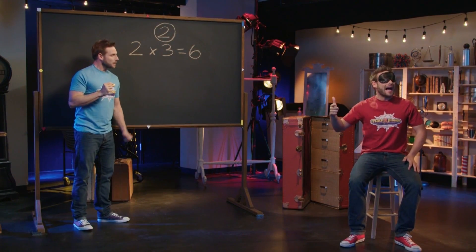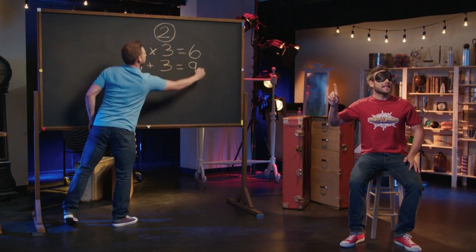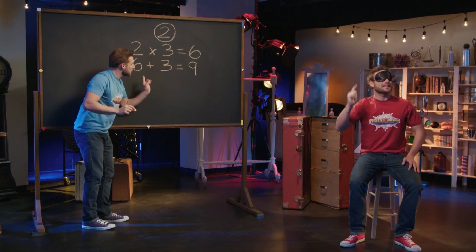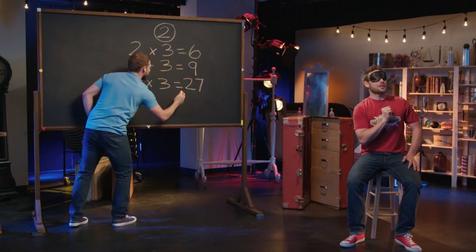Now add 3 to your new total. Now take that number and multiply by 3 once again. This should give you a 2-digit number.